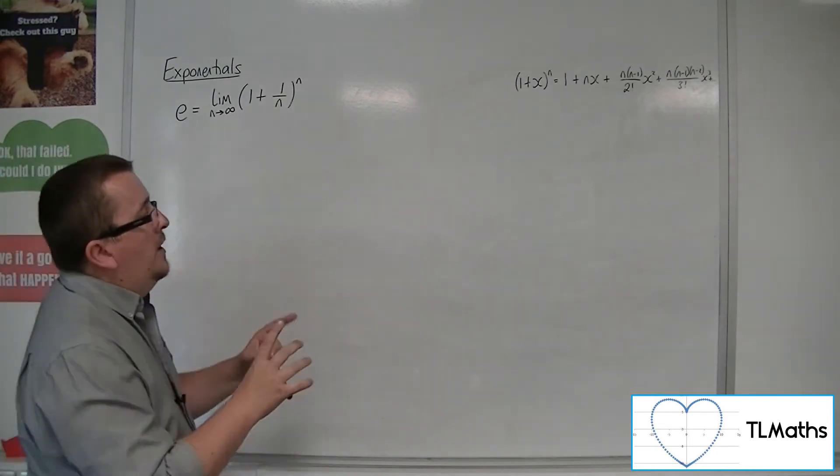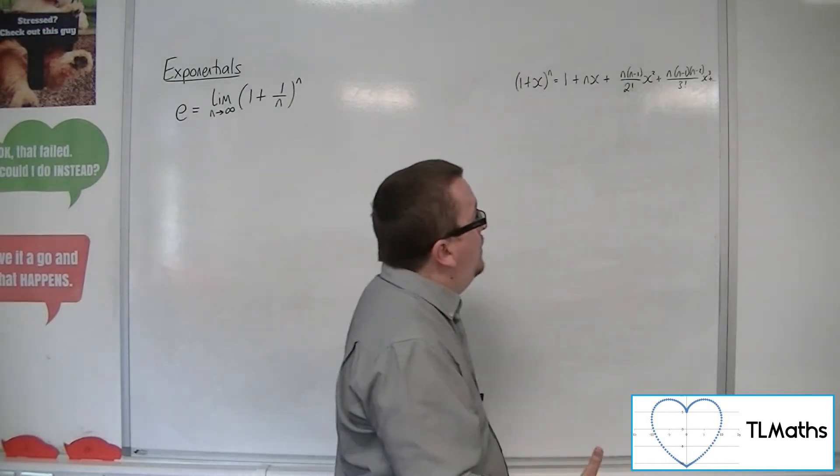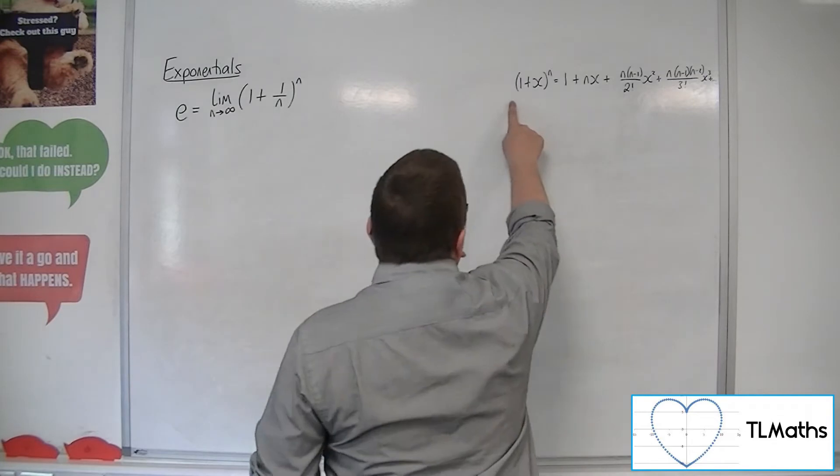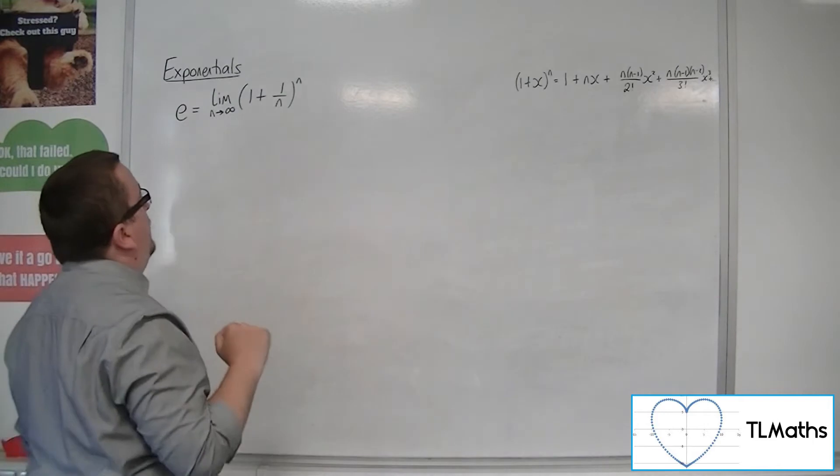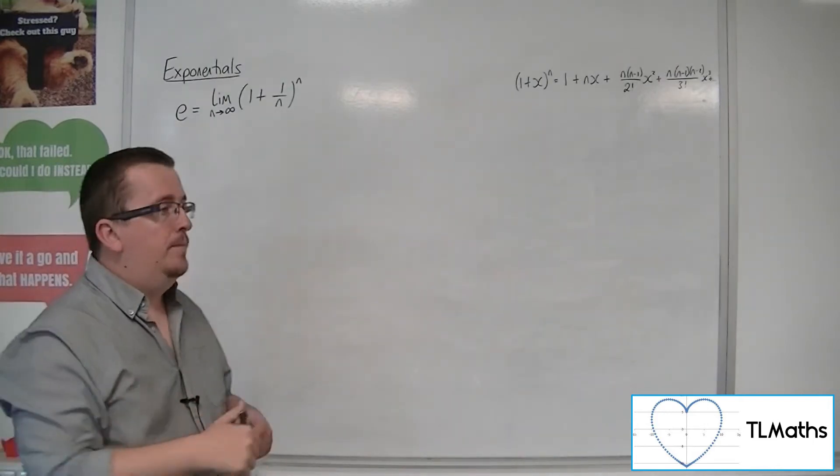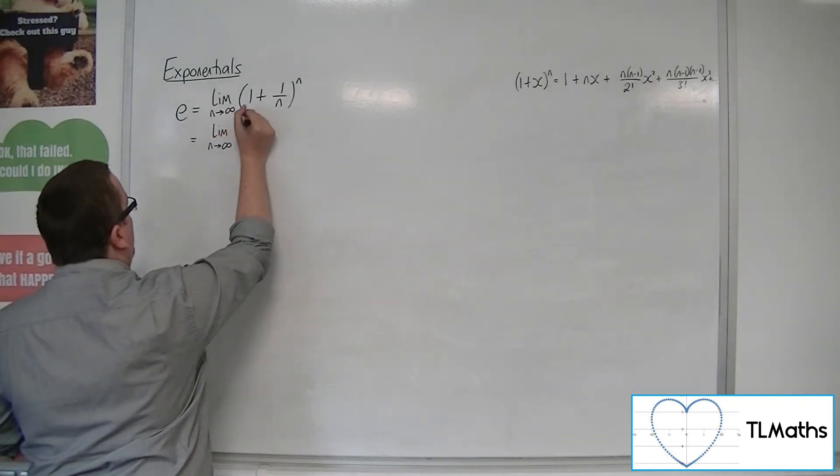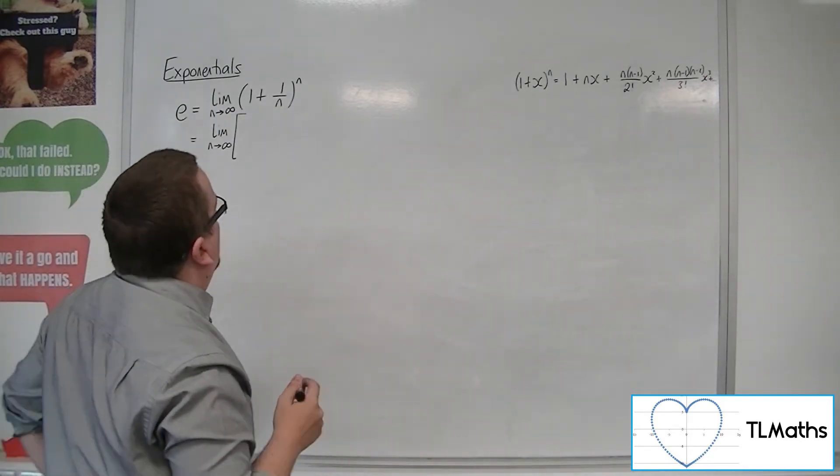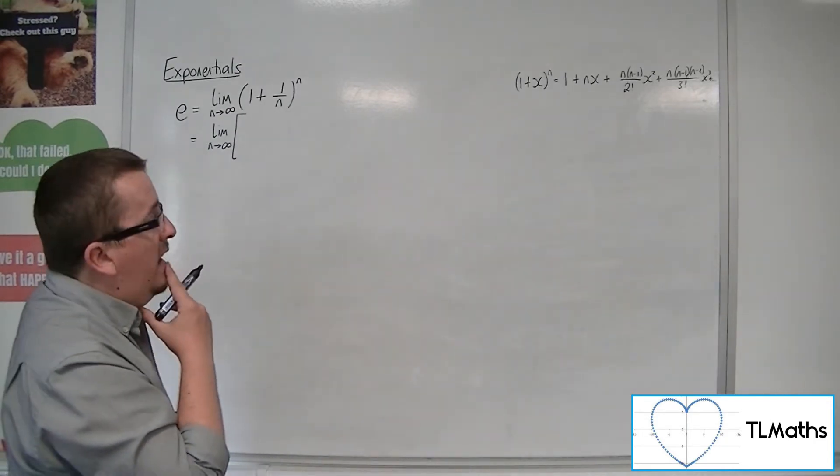Now, without the knowledge of McLaren series, as I've gone through that a couple of times in videos before, I'm actually going to use the binomial expansion method that we have here. And I'm going to consider the expansion of this 1 plus 1 over n to the n. So this must be the limit as n tends to infinity of, let's have a bigger bracket. We're going to expand this 1 plus 1 over n to the n using the binomial expansion that we know of.